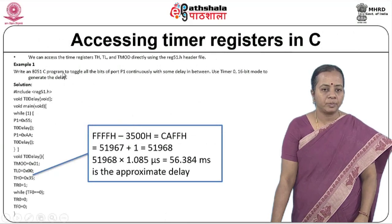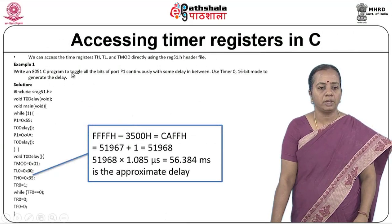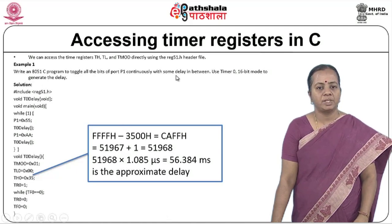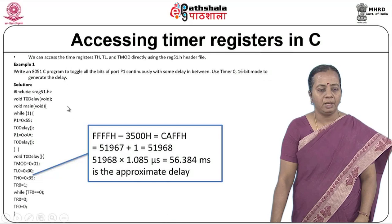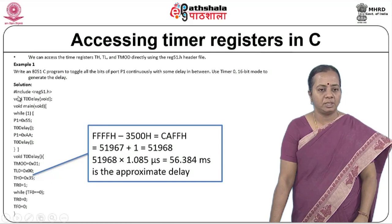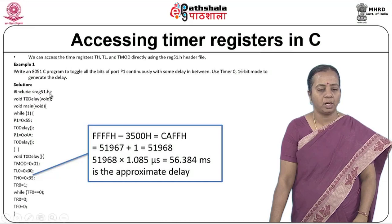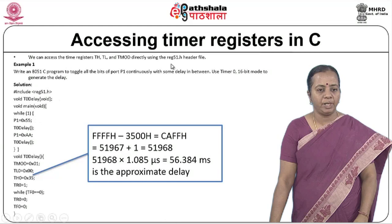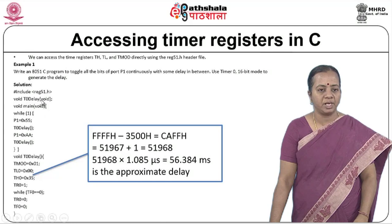Here is an example program where we write embedded C code to toggle all bits of port 1 continuously with some delay in between. We will use timer 0 in 16-bit mode (mode 1) to generate the delay. We include reg51.h as in previous modules — this tells the compiler the code is written for the 8051 controller, so it will be converted into that instruction set.